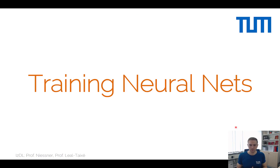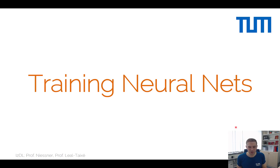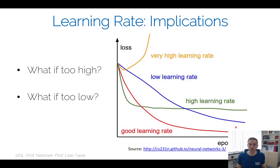In principle we now have everything needed to train neural networks: a model, backpropagation for gradients, and SGD variants to find good parameters. One of the biggest hyperparameters when using all of these methods is the learning rate — it's our biggest hyperparameter, and I'd like to talk more specifically about it today.